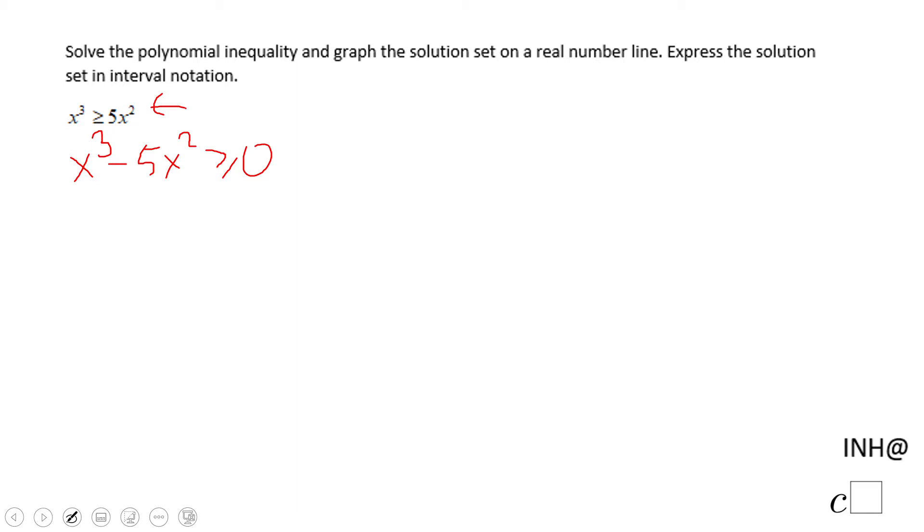And then you're going to use factoring. In this case we're going to use GCF. We have x² as a common factor and then x - 5.